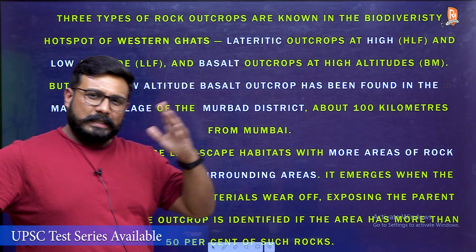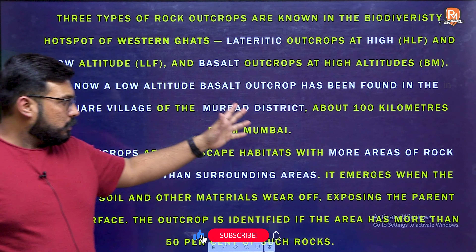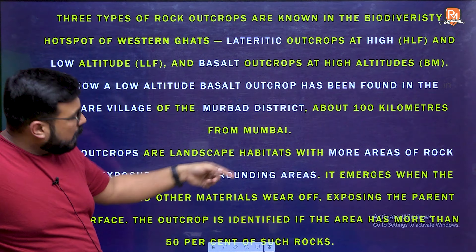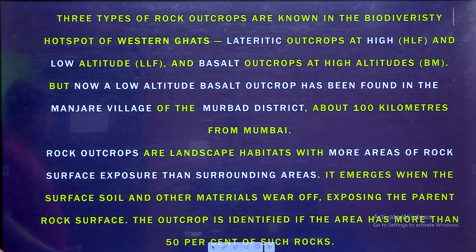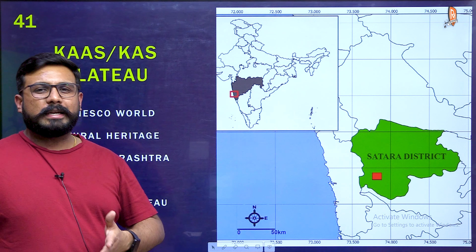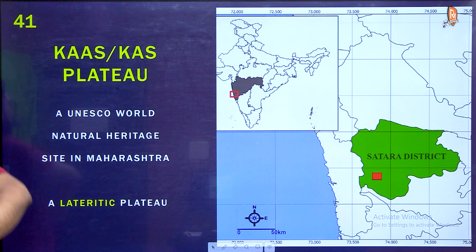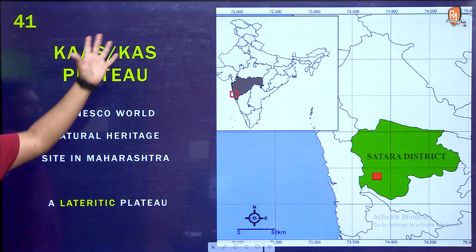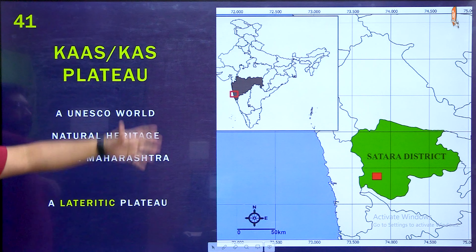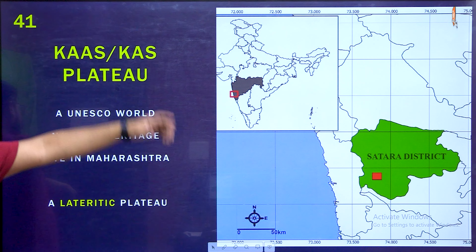The associated topics with this discovery are important. The newly discovered plateau is somewhat similar to the Kaas Plateau, which is a type of lateritic plateau. The Kaas Plateau is located in the Satara district of Maharashtra — the district is also important. This is a prime question for this year's exam: where is the Kaas Plateau located? It is in the Satara district of Maharashtra.